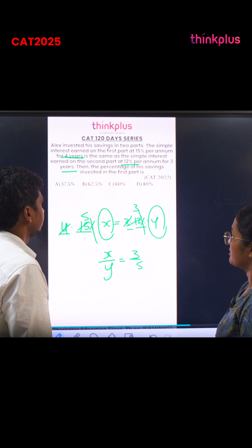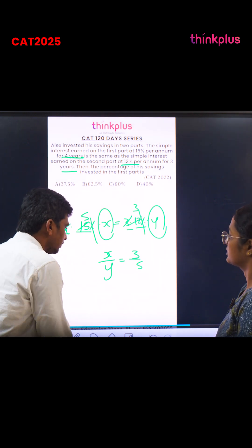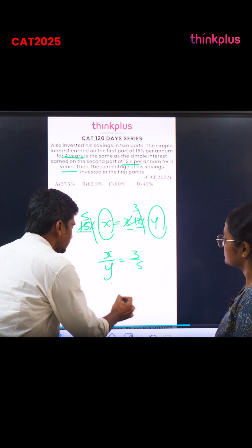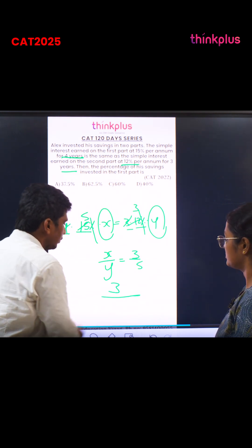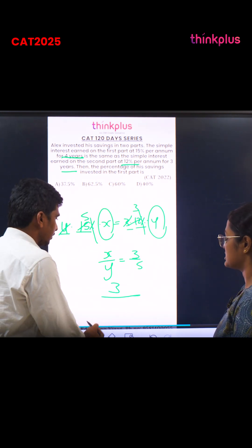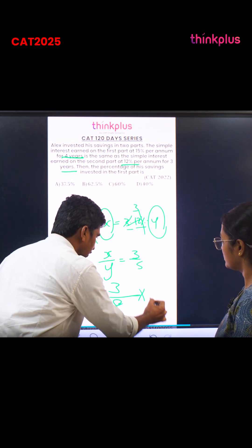Then the percentage of the savings invested in the first part is... What is the first part? X. X is how many parts? Three parts. By total how many parts? X plus Y, which is 3 + 5 = 8. So three by eight into hundred gives us the percentage.